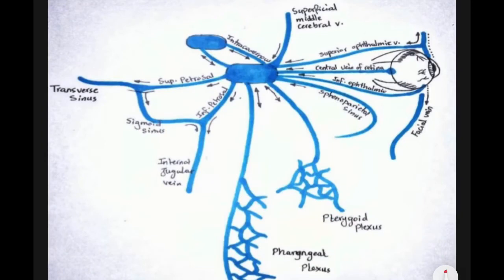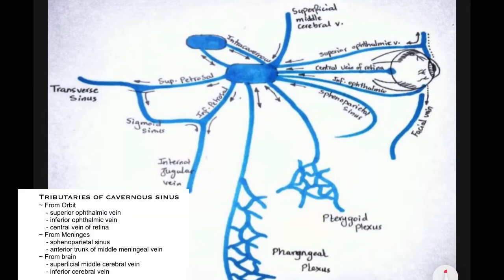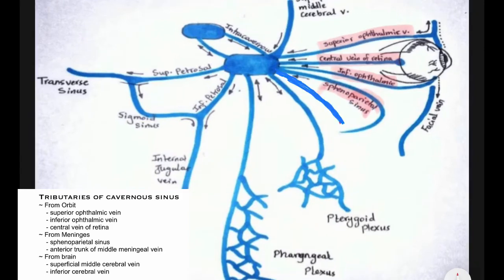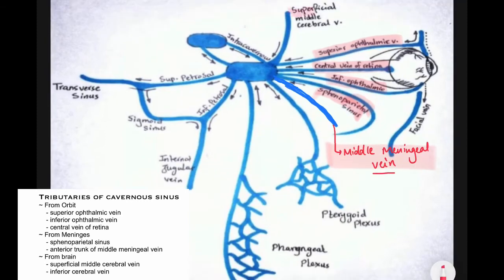Coming to the tributaries of the cavernous sinus — it receives blood from three sources: the orbit, meninges, and the brain. From the orbit: the superior ophthalmic vein, inferior ophthalmic vein, and the central vein of retina. From the meninges: the sphenoparietal sinus and the anterior trunk of the middle meningeal vein. From the brain: the superficial middle cerebral vein and the inferior cerebral vein.